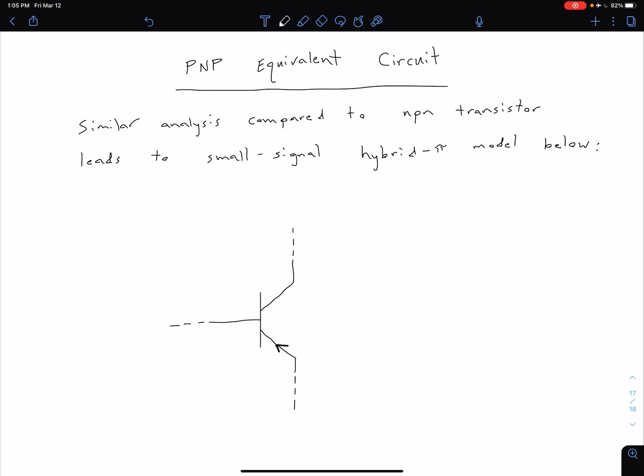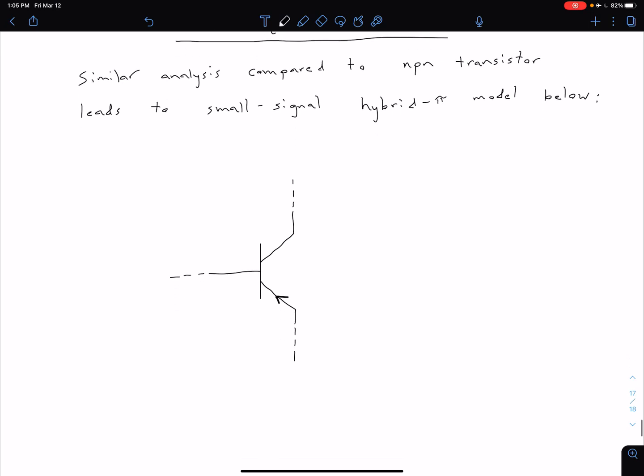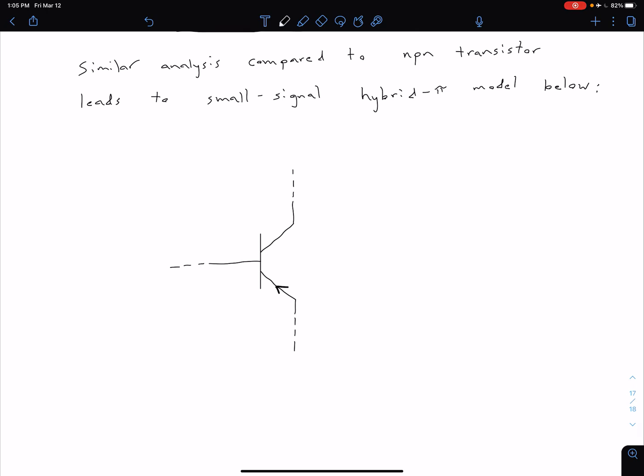But before we do that, let's look at our close-up view of our PNP BJT. The main difference is that our emitter current—so our emitter terminal is down here, collector is up here, base is over here in this drawing.